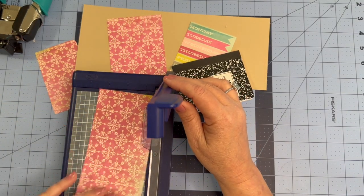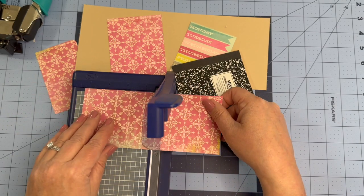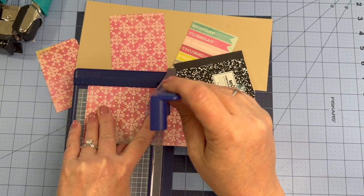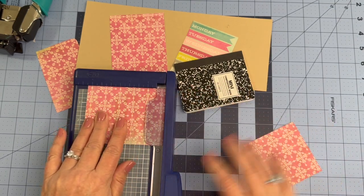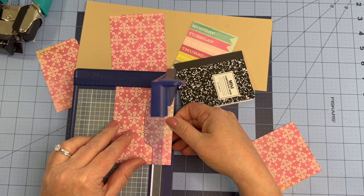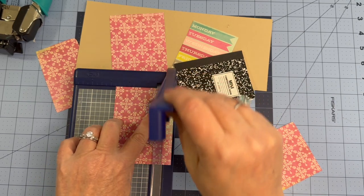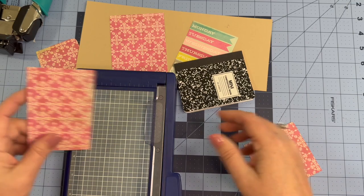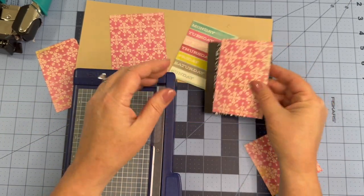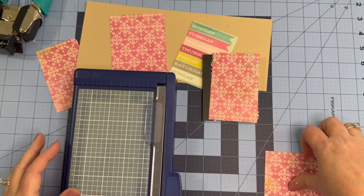So two and three quarters by four and a quarter. Let's go ahead and cut this paper. I'm going to cut it at four and a quarter first using my little personal trimmer from Creative Memories, I love this thing, by two and three quarters. Let me make sure that that's correct. Yes. Let's move our scraps aside.